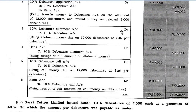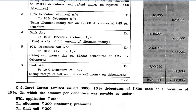Entry 3: 10% Debenture Allotment account debit Rs. 5,40,000 to 10% Debenture account Rs. 5,40,000 — being allotment money due on 12,000 debentures at Rs. 45 per debenture. Entry 4: Bank account debit Rs. 5,40,000 to 10% Debenture Allotment account Rs. 5,40,000 — being receipt of full allotment money. Entry 5: 10% Debenture Call account debit Rs. 3,00,000 to 10% Debenture account Rs. 3,00,000 — being call money due on 12,000 debentures at Rs. 25 per debenture. Bank account debit Rs. 3,00,000 to 10% Debenture Call account Rs. 3,00,000 — being receipt of full call money.